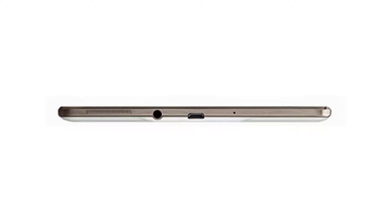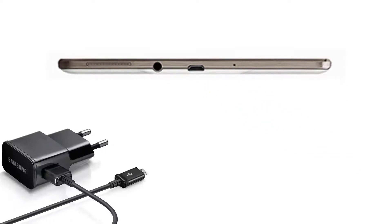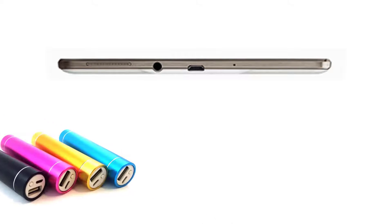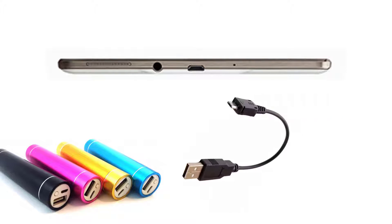A tablet can be charged through the mini USB port, usually located on the bottom of the tablet. To charge the device using a wall outlet, plug the USB cable into the Android wall charger. You may need to use external batteries to recharge the device in the field. To do this, connect your tablet to the external battery with the USB cable.